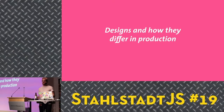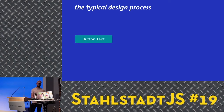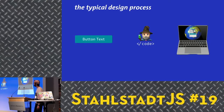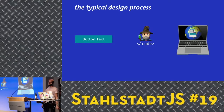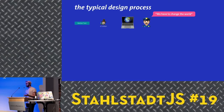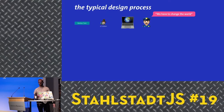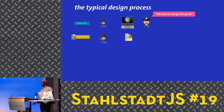So: designs and how they differ in production. There is always this kind of design process that starts with a design — in our case, a button, a really simple button. Then there might be a developer who implements this button, and the code gets shipped to the web. But that's just the start, because there's always a project manager who says we have to change the world — maybe I can't go with a green button, so why not make it yellow? And then the whole process spins again, and the developer has to implement it, and now the yellow button is in the product.